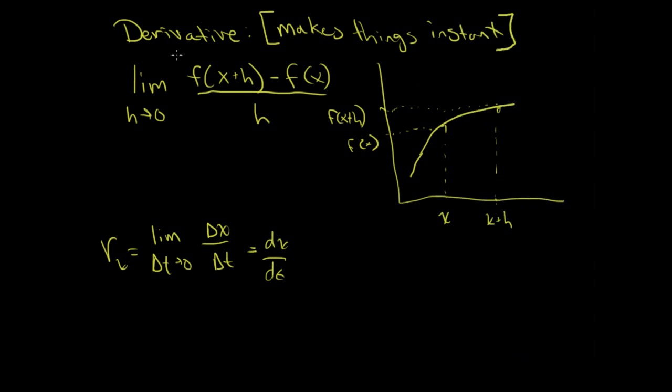Alright, the derivative, in a sense, makes things instant. It goes from average to instant. What happens is, if you're just looking at what's in these purple parentheses here, this is technically just an average slope. It's a change in x, or a change in y, over a change in x, because x plus h minus x is h. So this is nothing more than that change in x, and this is nothing more than a change in y. This is an average slope.